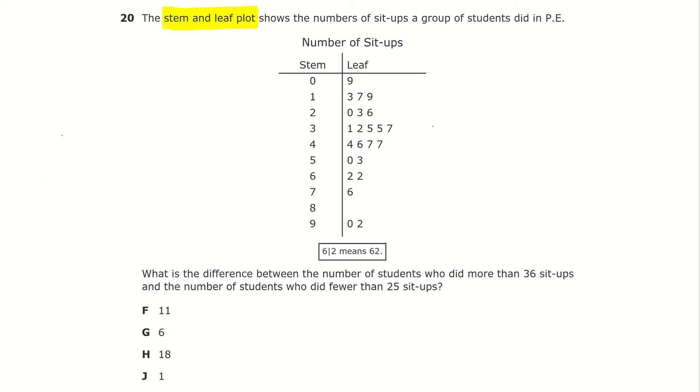The stem and leaf plot shows the number of sit-ups a group of students did in PE. What is the difference between the number of students who did more than 36 sit-ups and the number of students who did fewer than 25 sit-ups?